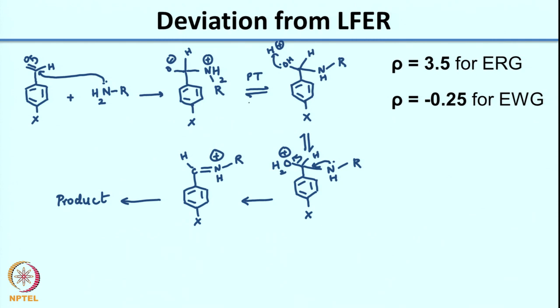In this mechanism, the proton transfer steps occur pretty quickly — those would be fast steps. The two steps that would go relatively slowly are: step A, which is the nucleophilic attack of NH2 on the aldehyde carbon, and step B, which is the dehydration step where water leaves to generate the carbocation intermediate. Now let us look at the situation when you have X as an electron-releasing group versus X as an electron-withdrawing group. Which of these steps will go slower for each case?